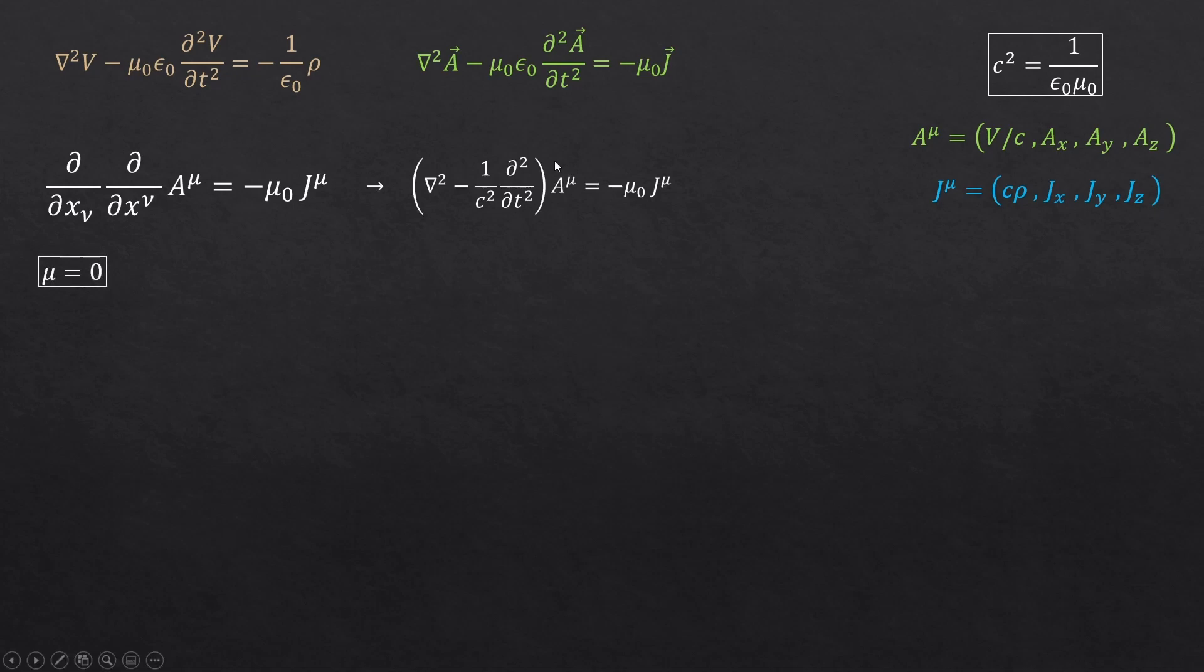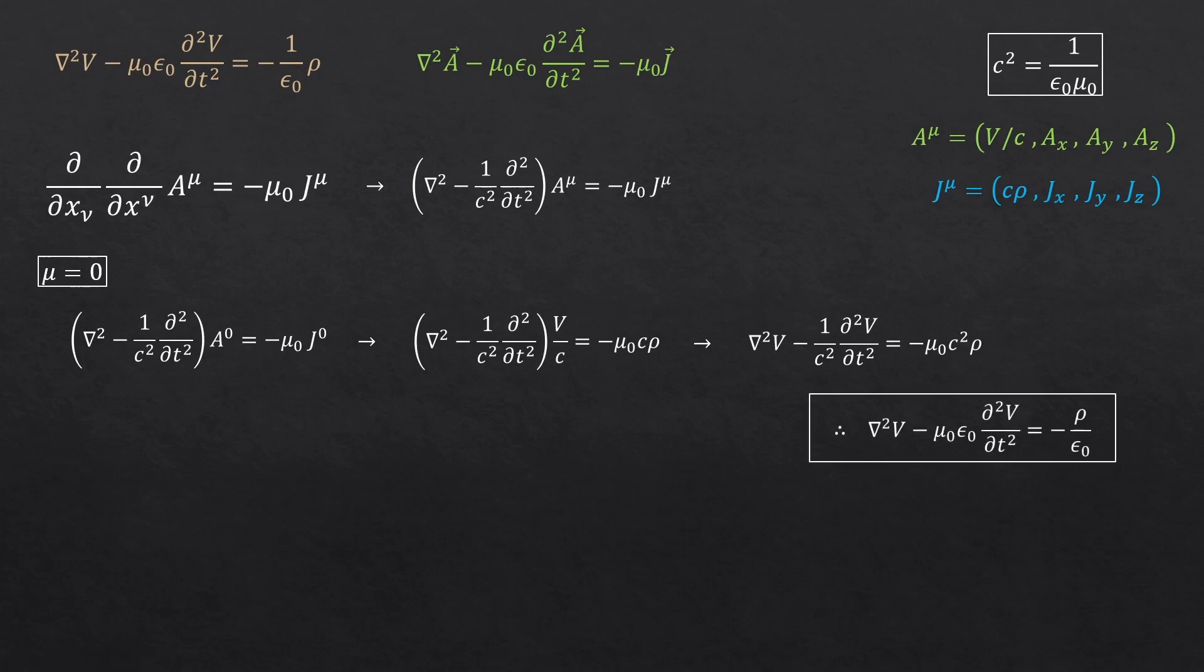Let's first consider the index mu being equal to zero. A to the zero is V over c and j to the zero is c rho. If I just move this c to the other side and knowing the fact that this c squared is 1 over epsilon naught mu naught, we obtain this equation. And what is this? This was one of our new Maxwell's equations, which consists of the scalar potential.